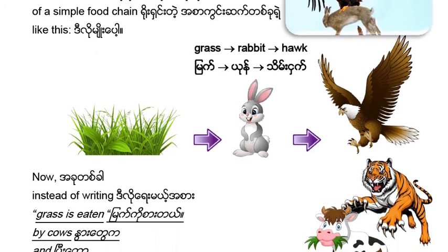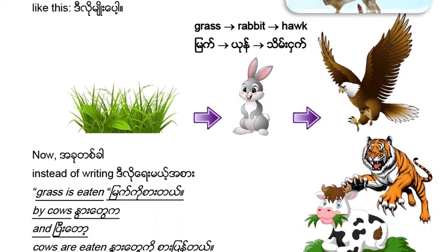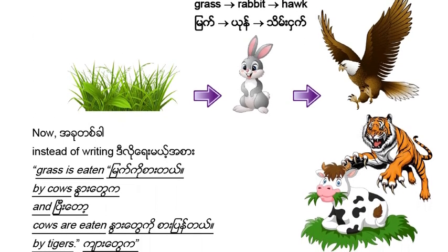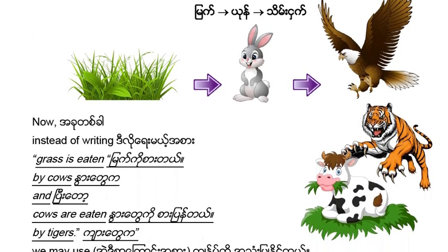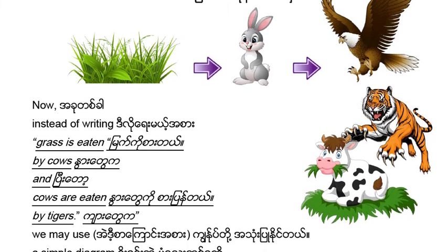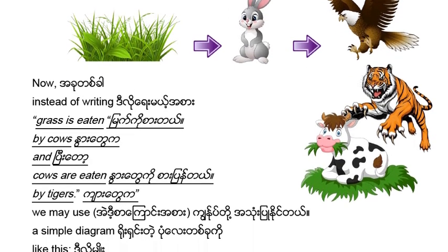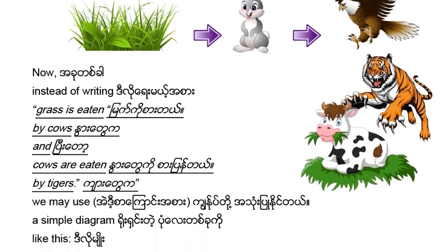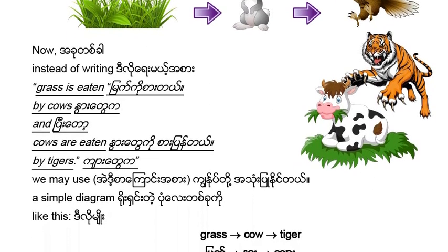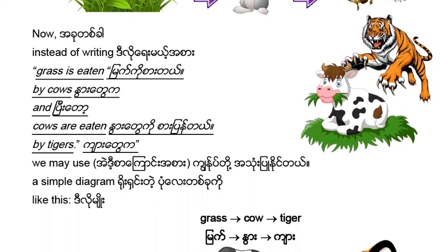Now, instead of writing grass is eaten by cows and cows are eaten by tigers, we may use a simple diagram like this: grass → cow → tiger.